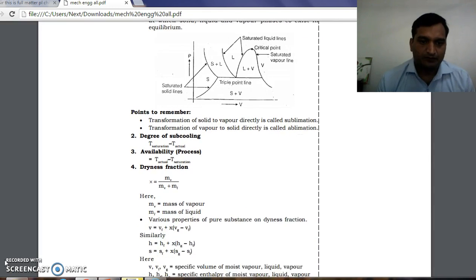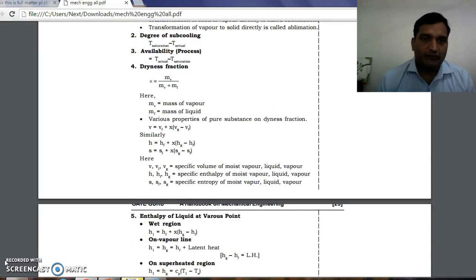Next, dryness fraction. As we know, steam is of three types: wet steam, dry steam, and superheated steam. So if steam is wet, how wet it is—how can we know this? For that we should have dryness fraction.